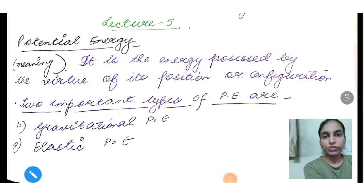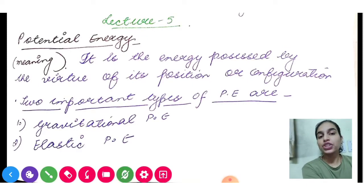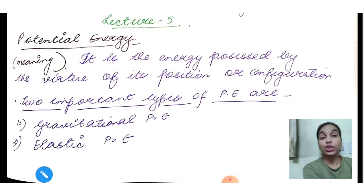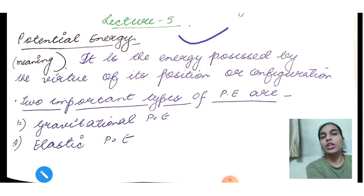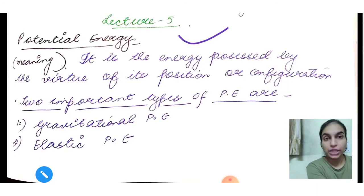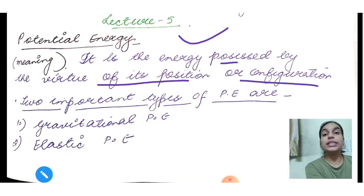This is lecture 5 on work, power and energy, and today's topic is potential energy. Last lecture I told you that the mechanical energy we are going to study has two parts: kinetic and potential. In the last lecture we discussed kinetic energy. For potential energy, the definition you studied in class 9 is that it is the energy possessed by virtue of its position or configuration — but this is just a meaning, not a definition.